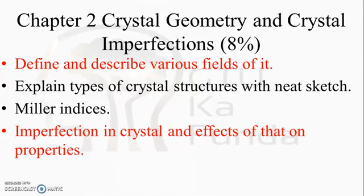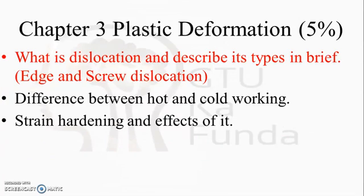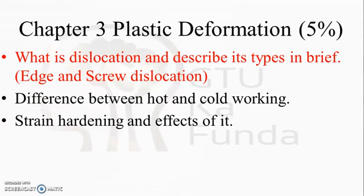Chapter 3 is Plastic Deformation, which contains five percent weightage. As you can see, these early chapters carry five to six percent each, so GTU can ask any seven-mark theory or a three- or four-mark question from them. If you do not want to spend much time on these chapters, just go through the key questions. The important questions are: dislocation and its types — edge dislocation and screw dislocation; the difference between hot and cold working; strain hardening and its effects. Hot and cold working and strain hardening are asked repeatedly.